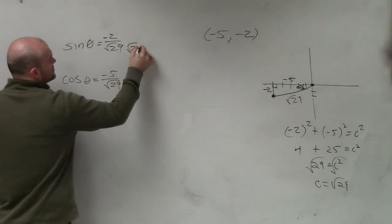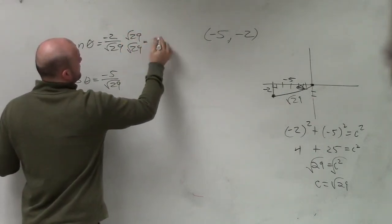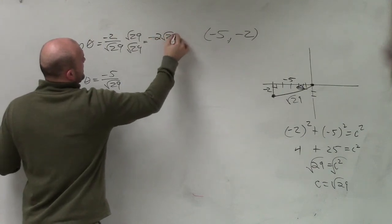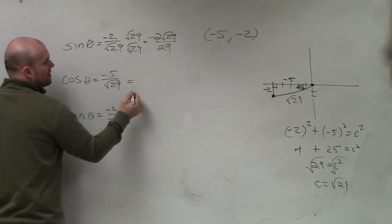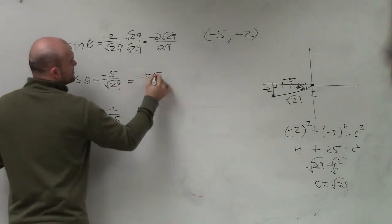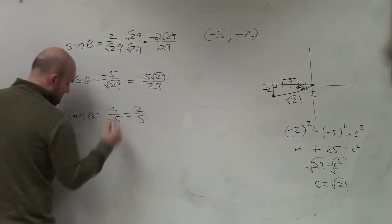Obviously, to simplify, guys, we have to rationalize the denominator. So my final answer is negative 2 square root of 29 over 29. This is going to have the same thing when I rationalize the denominator, negative 5 square root of 29 over 29. This now turns to positive, so it's going to be 2 fifths.